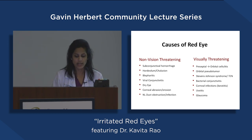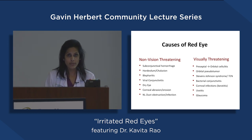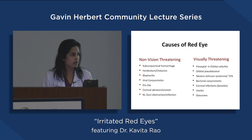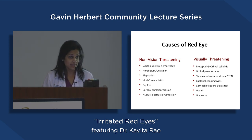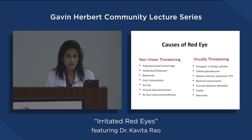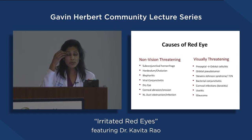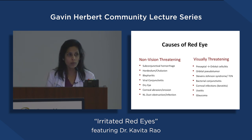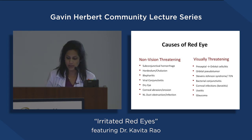Some things are more concerning that we want to follow closely: something called cellulitis, or an infection of the skin around the eyelids. Sometimes this is called preseptal cellulitis where it's more superficial, but sometimes the infection can spread into where the eye sits — then we call it orbital cellulitis, which is very concerning. Sometimes we admit people to the hospital for this condition.